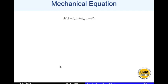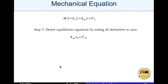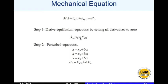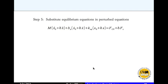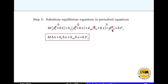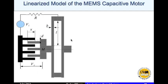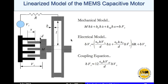For the mechanical equation, setting all derivatives to zero at equilibrium gives: fc_0 = k_equivalent * x_0. We then perturb x, x_dot, x_double_dot, and fc about the equilibrium point. There are no non-linear terms here, so we simply substitute the equilibrium equations — noting that k_equivalent*x_0 = fc_0 — and obtain the linearized mechanical equation. This completes linearization of all three equations: the mechanical model, the electrical model, and the coupling equation.